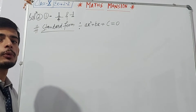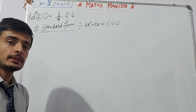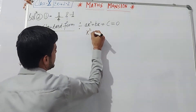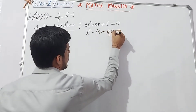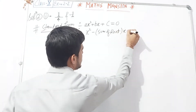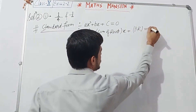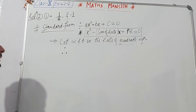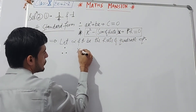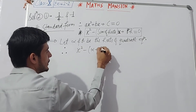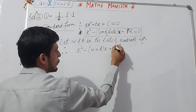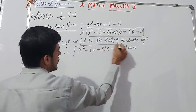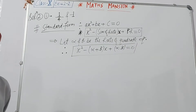As we know, the standard form of a quadratic equation is ax² + bx + c. In another form, it can be written as x² minus (sum of roots)·x plus (product of roots) = 0. Now let us suppose that alpha and beta are the roots of this quadratic equation. We can write this as x² minus (alpha + beta)·x + (alpha × beta) = 0. We will be using this equation in solving these questions.